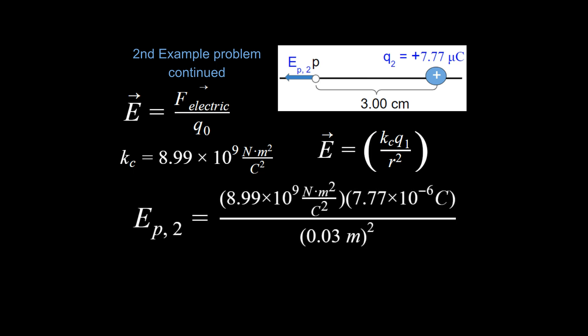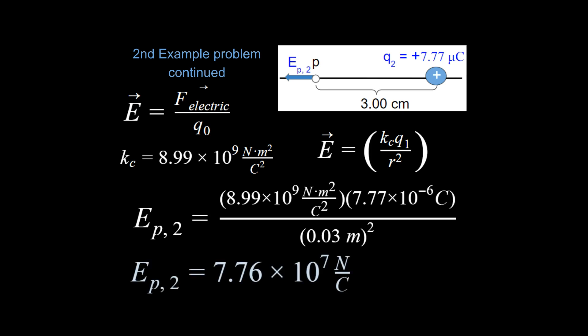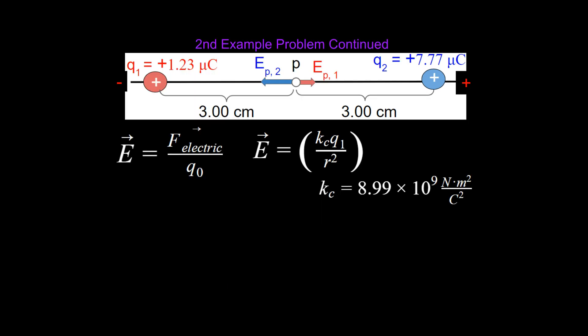If we do the same thing for the second charge and plug in our numbers — note the charge value is larger, so we'd expect a larger electric field at that point — we end up with 7.76 times 10 to the seventh newtons per coulomb. Then it gets a little trickier. We've calculated E_P1 and E_P2. If E_P1 was 5 and E_P2 was 3, is the net electric field 8? The answer is no — we can't just blindly add up these numbers because they are vectors.